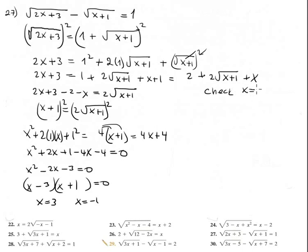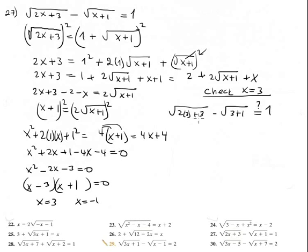Checking x equals 3 in the original equation: square root of 2 times 3 plus 3, minus square root of 3 plus 1, should equal 1. That's square root of 9 minus square root of 4, which is 3 minus 2, equals 1. True — x equals 3 is correct.